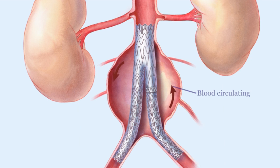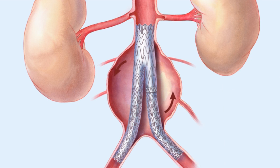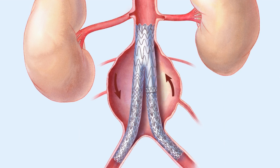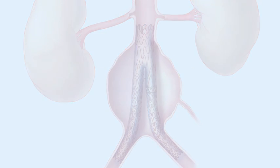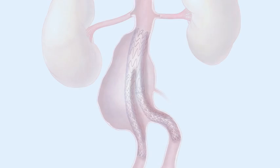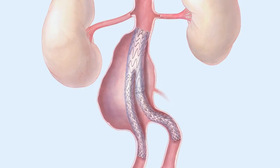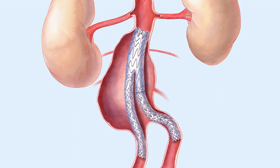An endoleak occurs when blood continues to circulate in the aneurysm sac. To reduce the risk of aortic rupture, continued monitoring for endoleaks is necessary following stent placement. The two most common endoleaks are known as type 1 and type 2.